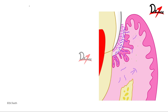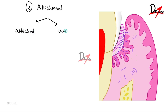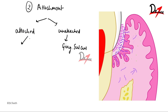The second way to classify plaque is based upon its attachment. Based upon attachment, we can classify plaque as attached plaque or unattached plaque. The unattached plaque is present in the gingival sulcus and is not attached to either the tooth or any other tissue — it is free or planktonic in nature. These bacteria present in the gingival sulcus are not attached to either the tooth or the epithelium, so they are called unattached plaque.